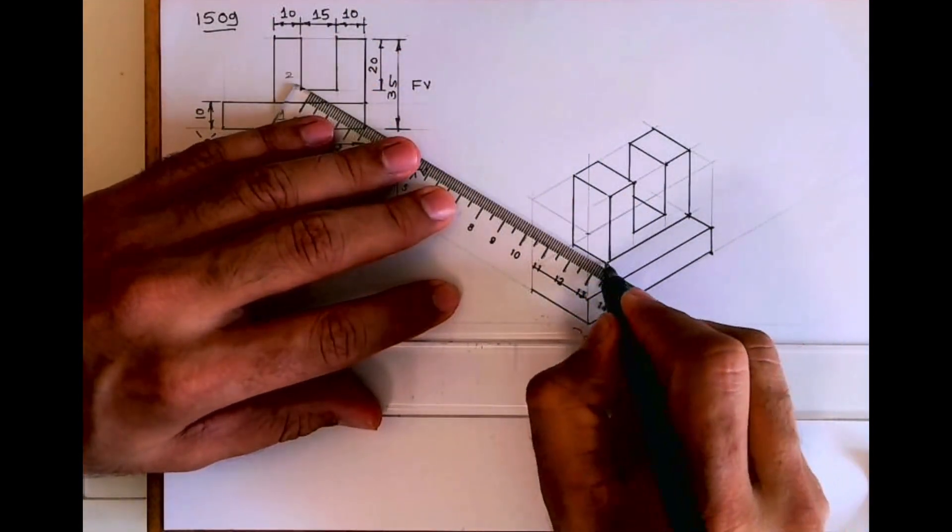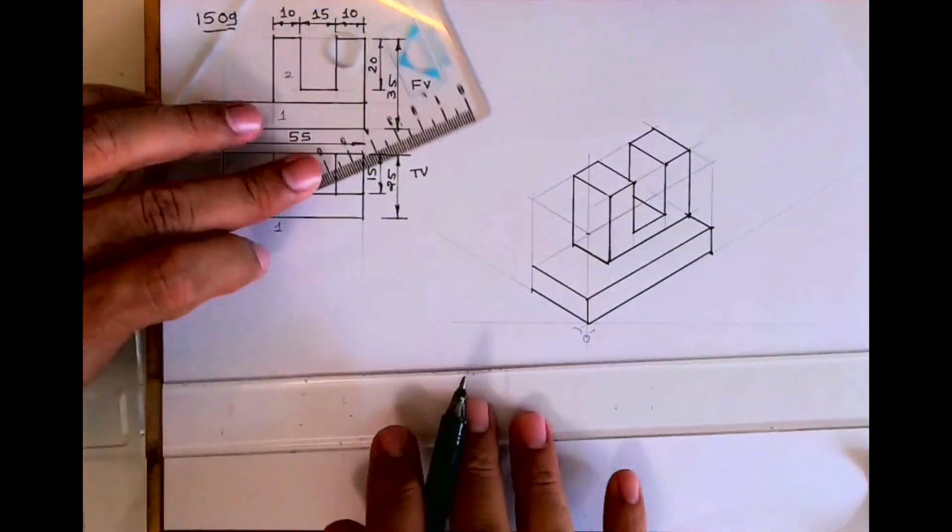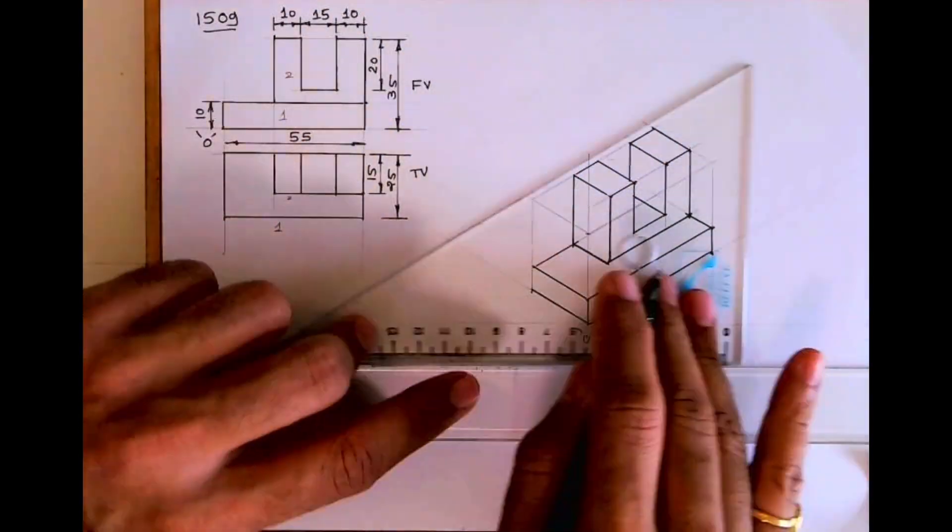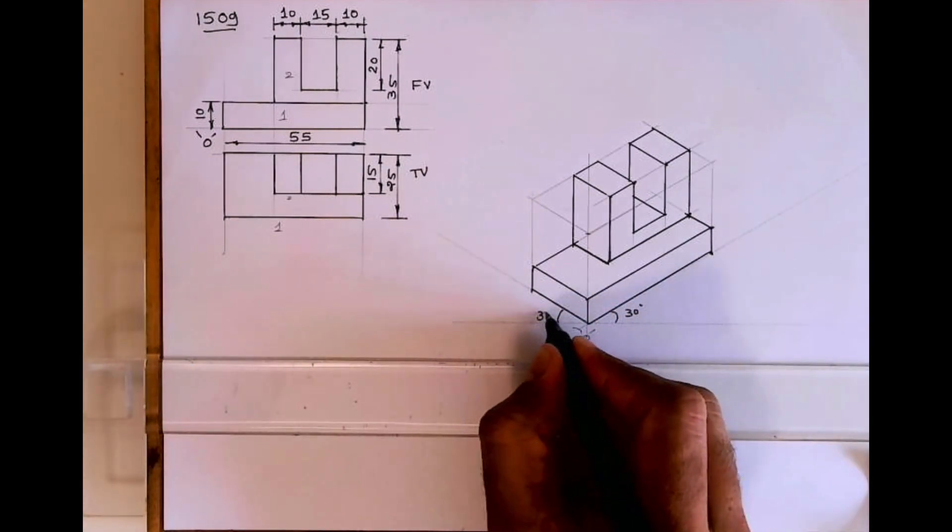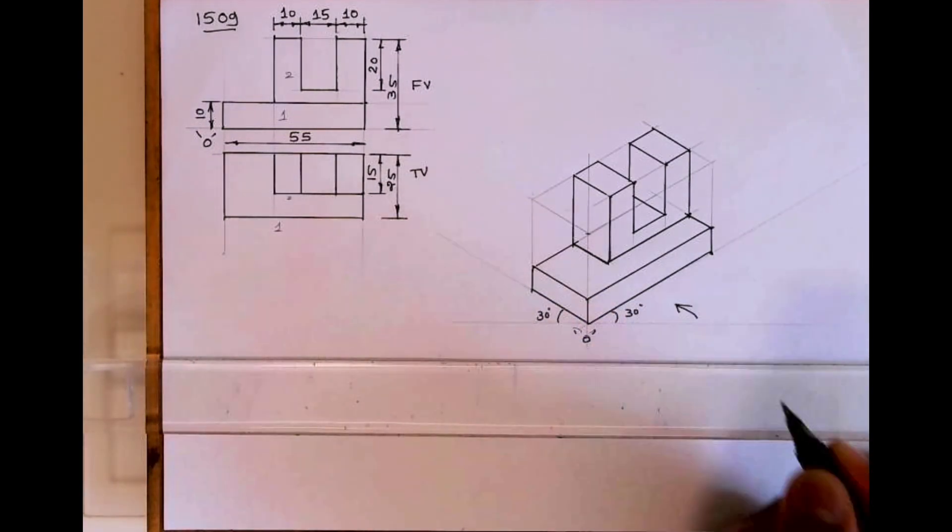You draw line like this, then again you draw line from here. So this is how you get the isometric sum. I hope you people have understood this. Thank you.